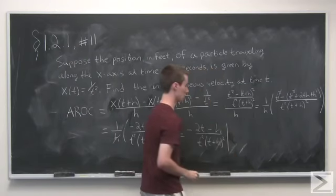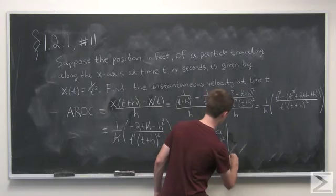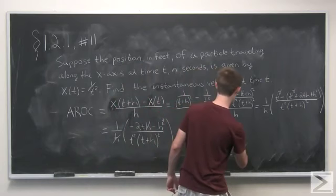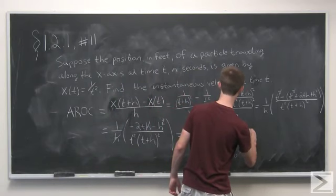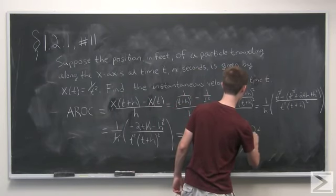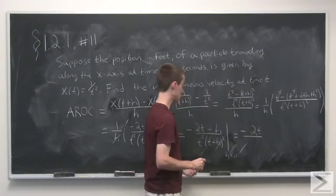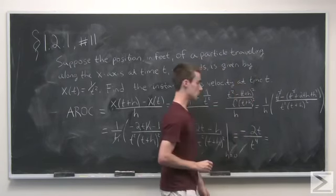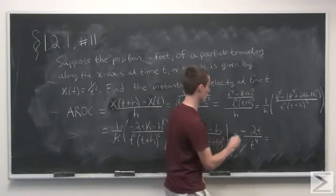So we'll write this vertical bar here with h equals 0, just meaning that we're substituting in 0 for h. And we get minus 2t over t to the 4th, which equals minus 2 over t cubed.